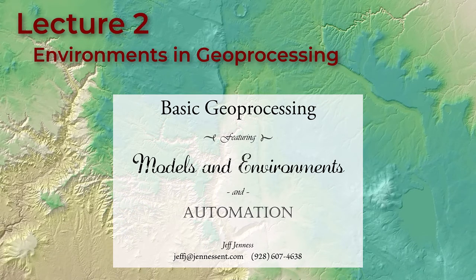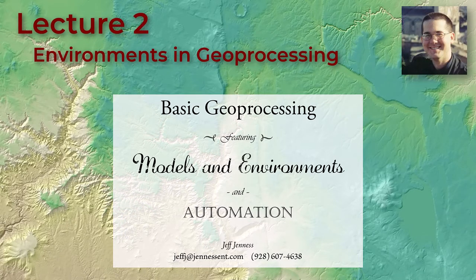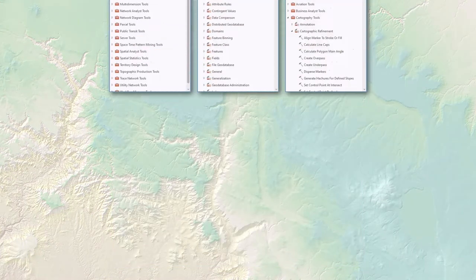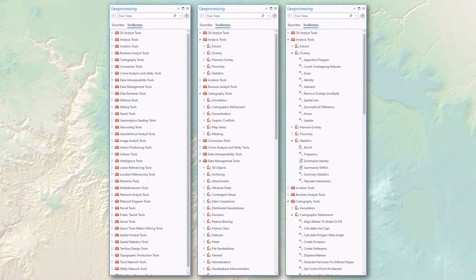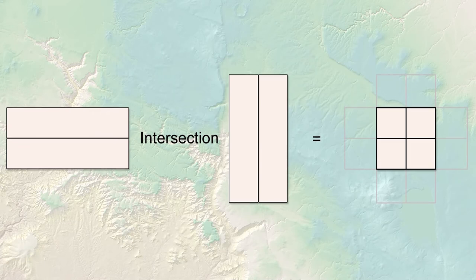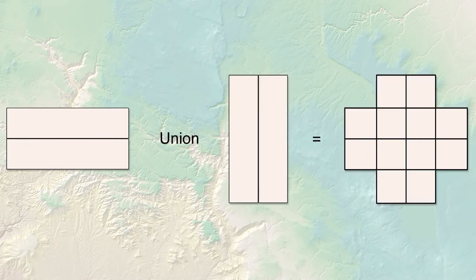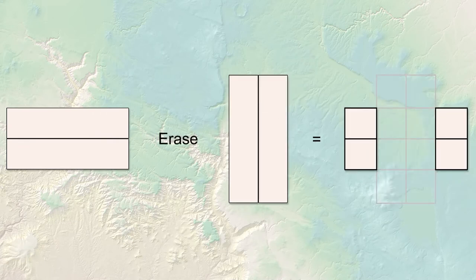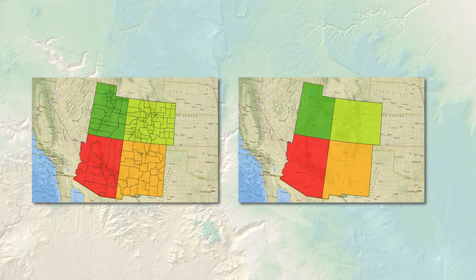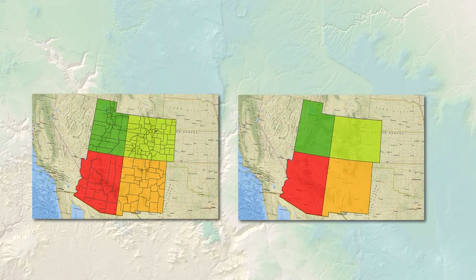Hello everybody, this is Jeff Janess again continuing our lecture on geoprocessing, models, and environments. Last video we talked about basic geoprocessing — we looked at some of those geoprocessing tools and showed you how to use them. Today we're going to move on to environments and environmental settings, giving you more ways to run these tools.